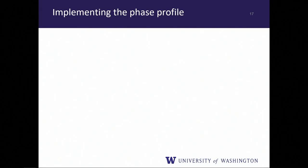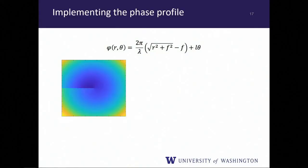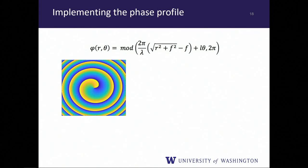With our parameter set established, in forward design we implement a known phase profile. For a focusing vortex beam generator, the phase profile in polar coordinates (r, θ) combines a lens term (focal length f) and an angular momentum term L·θ that determines the number of phase singularities. For L=1 there is one singularity; for L=2 there are two, corresponding to different quantized orbital angular momentum states. After computing the continuous phase profile and applying a mod 2π operation, we get the characteristic vortex pattern.